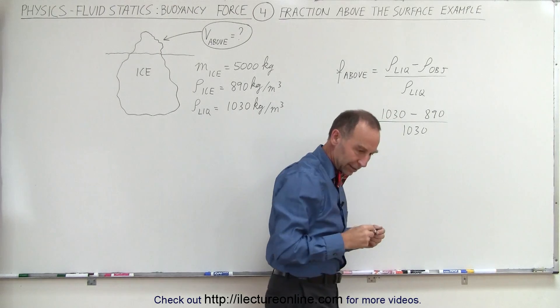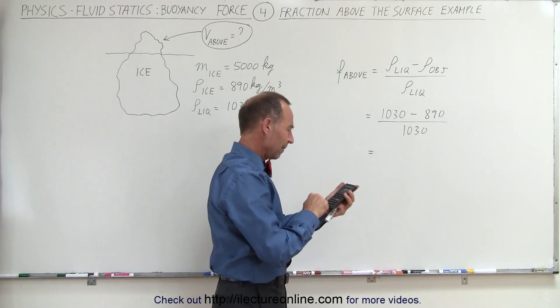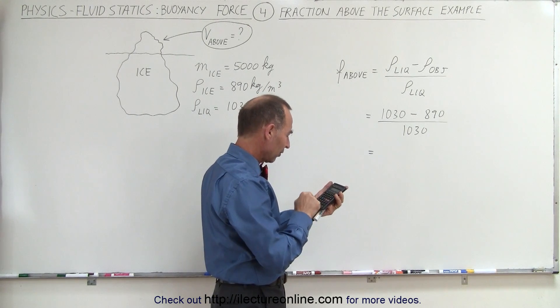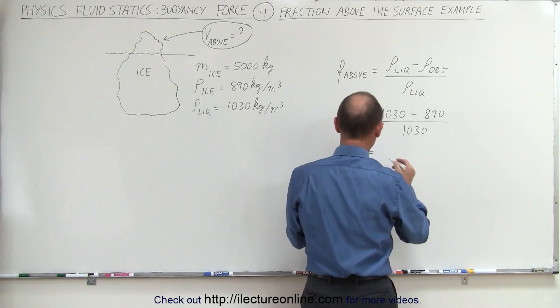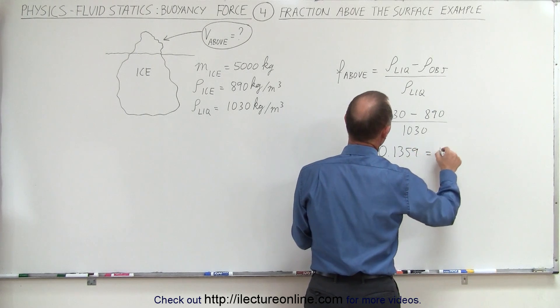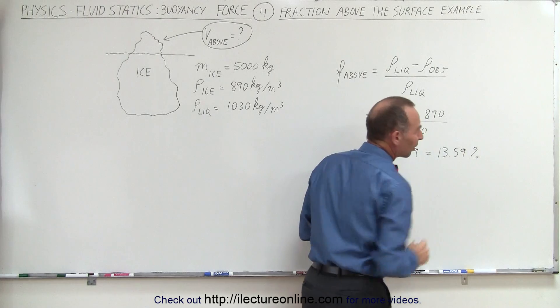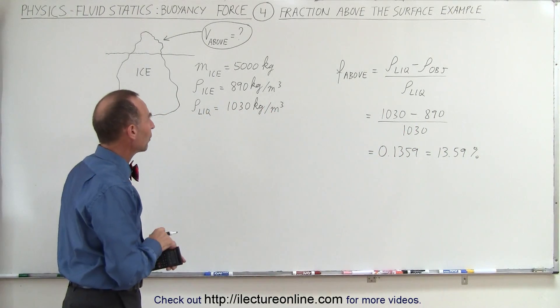Let's see, 1,030 minus 890, that's 140 divided by 1,030 equals 13.59%. So that's 0.1359 or 13.59%. I'm keeping a couple of extra decimal places to reduce my rounding error.